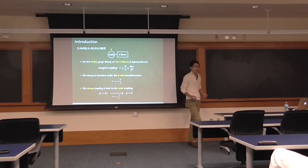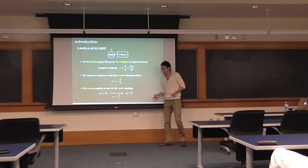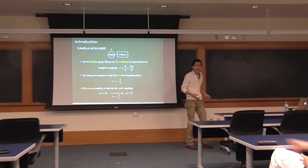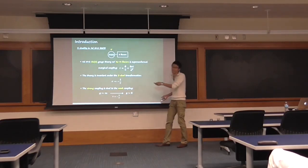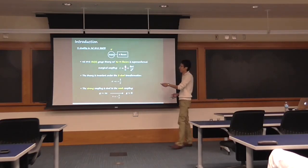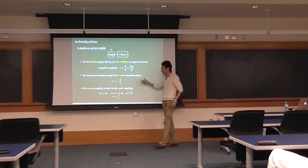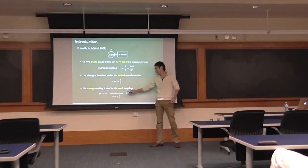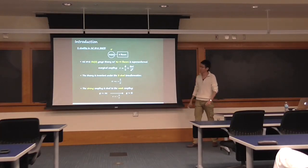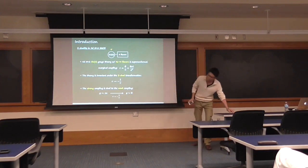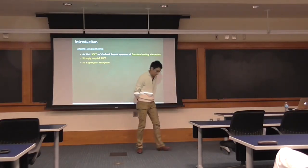This S-duality transformation maps G equal infinity to G equal zero, which means that the strong coupling limit of this theory is mapped to the weak coupling limit by this transformation. Because the theory is invariant under this transformation, the physics at strong coupling is basically equivalent to the physics at G equal zero. When you have a non-vanishing theta, this transformation gets more complicated, but as an example, when theta is zero, G equals infinity maps to G equals zero.